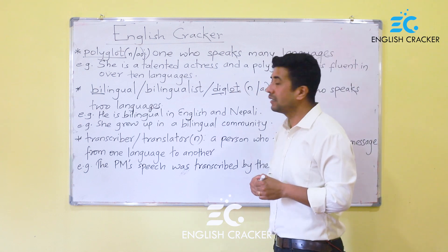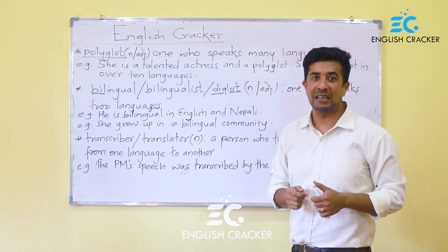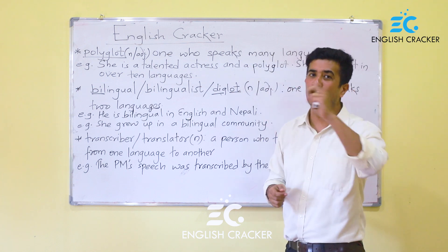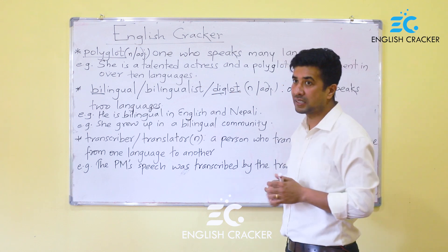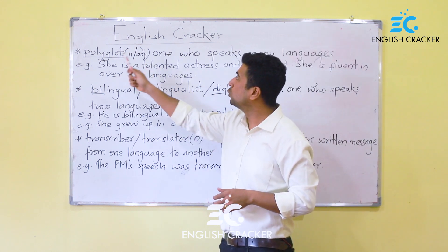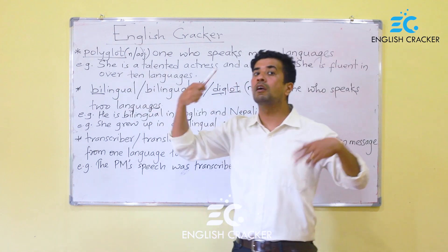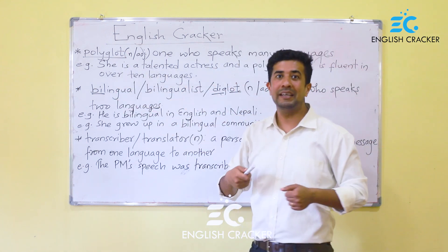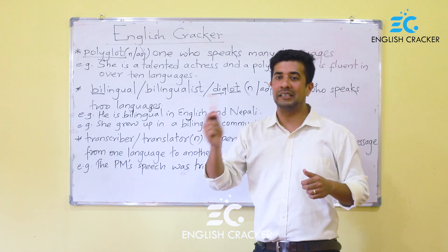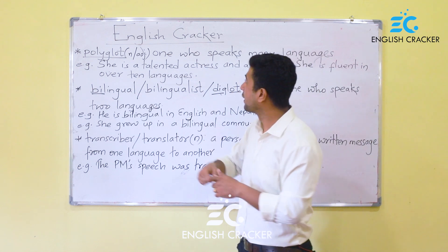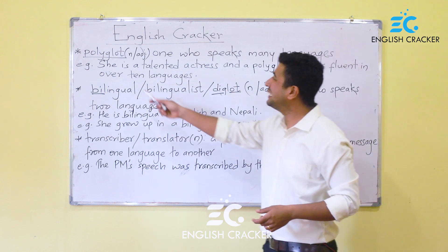Polyglot. What does polyglot mean? One who speaks many languages — someone who can speak many languages. This word functions as both a noun and an adjective. You can say 'a polyglot person' using it as an adjective, or 'he is a polyglot' using it as a noun.